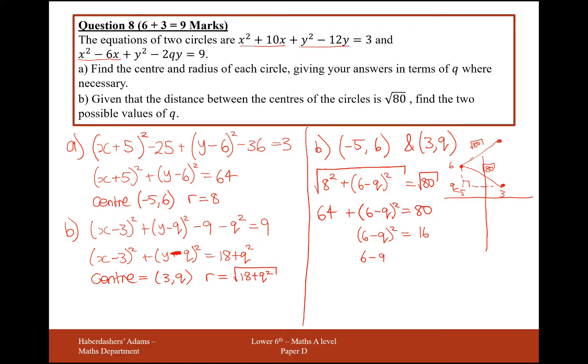So, therefore, 6 minus q must equal plus or minus 4. Make sure you don't forget to do plus or minus there to get your two different solutions. So, working with each of the different values of plus or minus, when we have 6 minus q equals 4, then q must obviously equal 2. And when 6 minus q equals minus 4, then we need to take away, so add the 4 onto the side, you get 10, add the q onto the side, you get q. So, q is either equal to 2 or is equal to 10. Great, 9 marks for that.